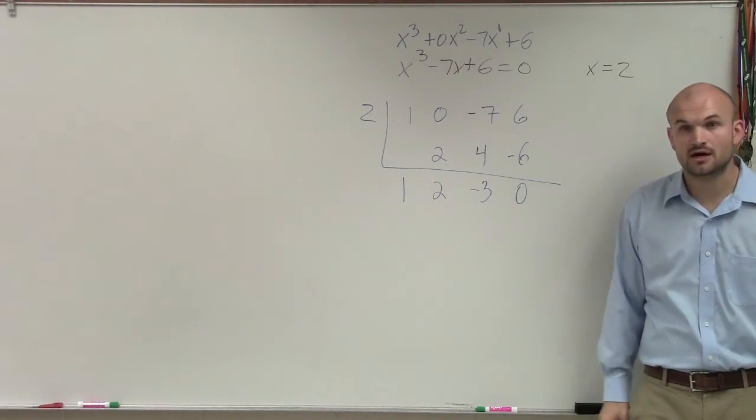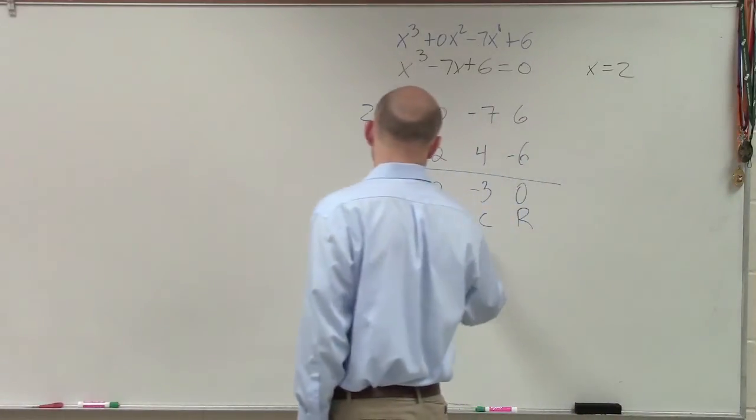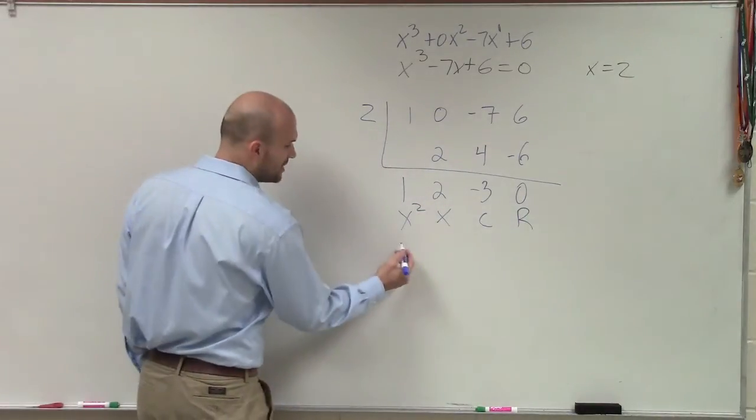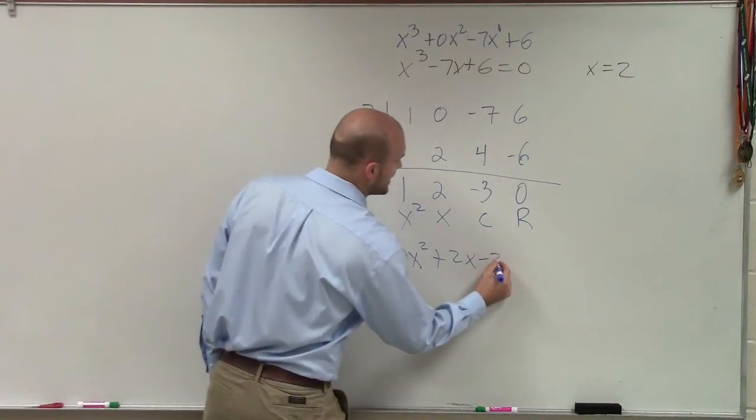So that's our resultant polynomial here. Remember this is our remainder, constant, linear, and then quadratic. So to write our quotient polynomial, what we have is x squared plus 2x minus 3.